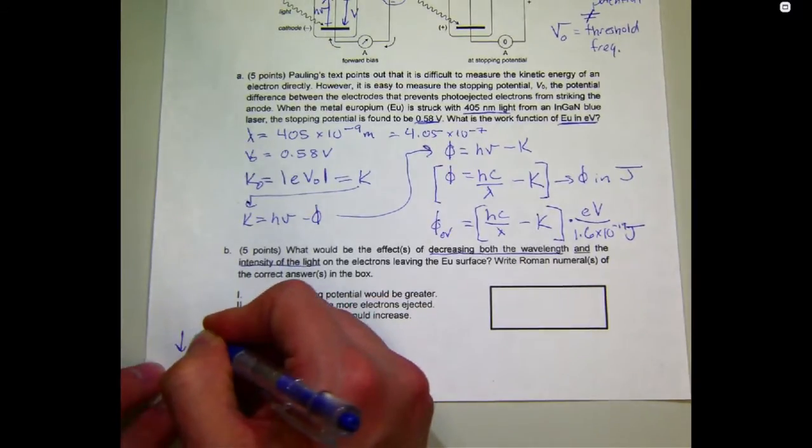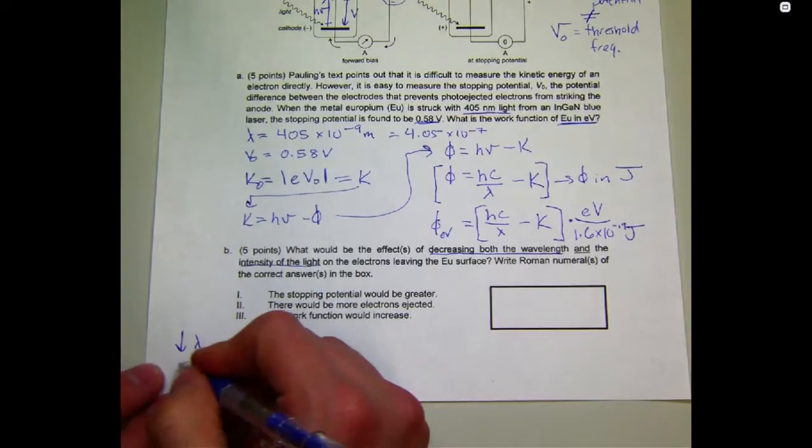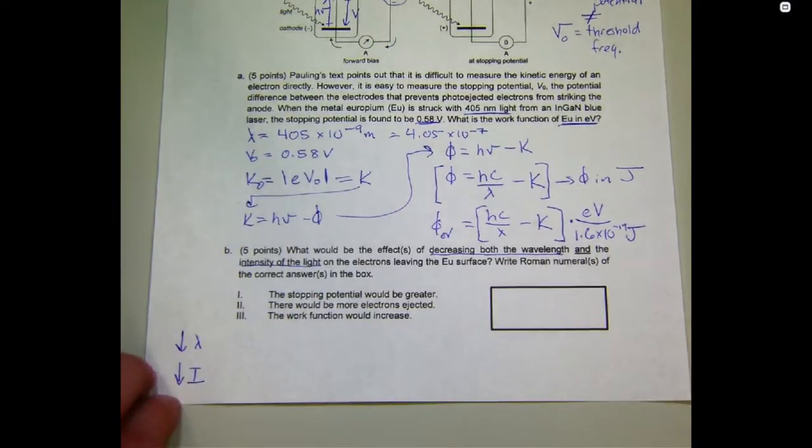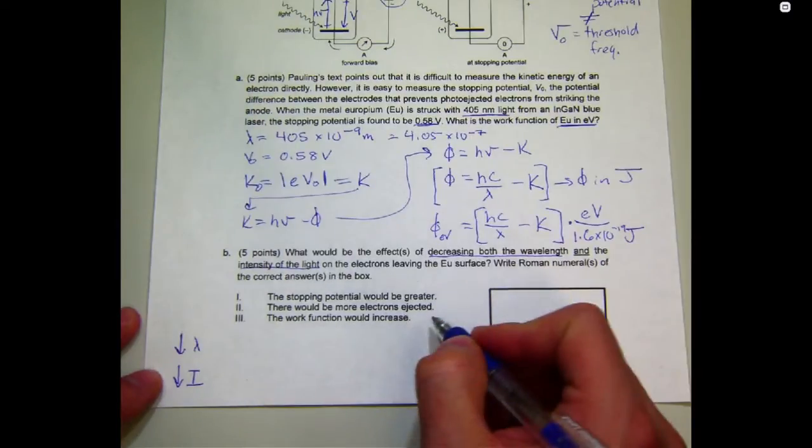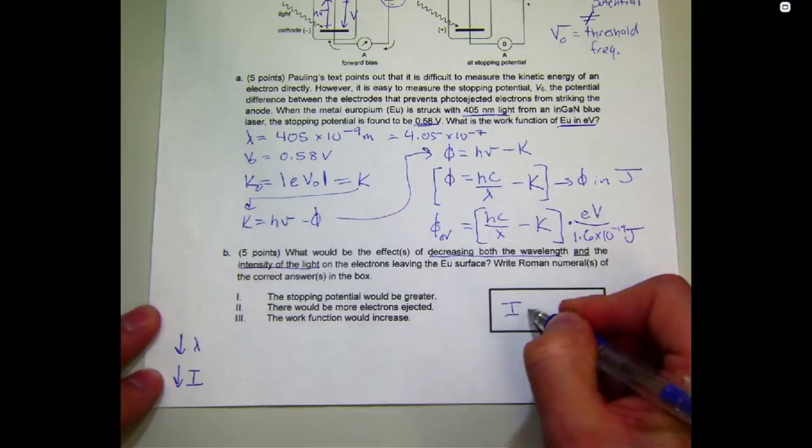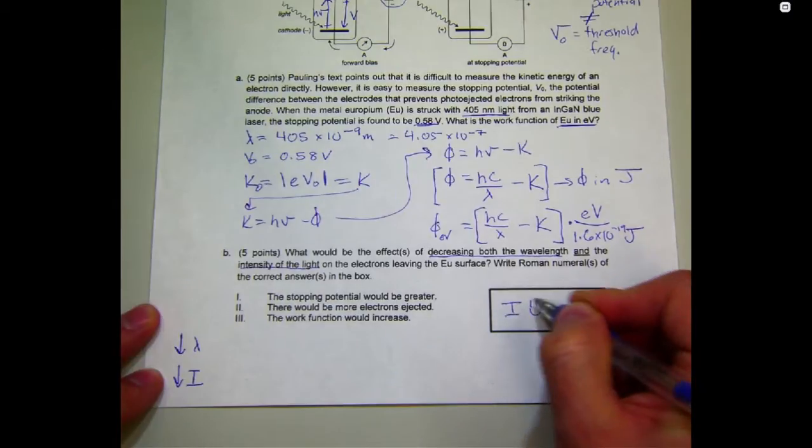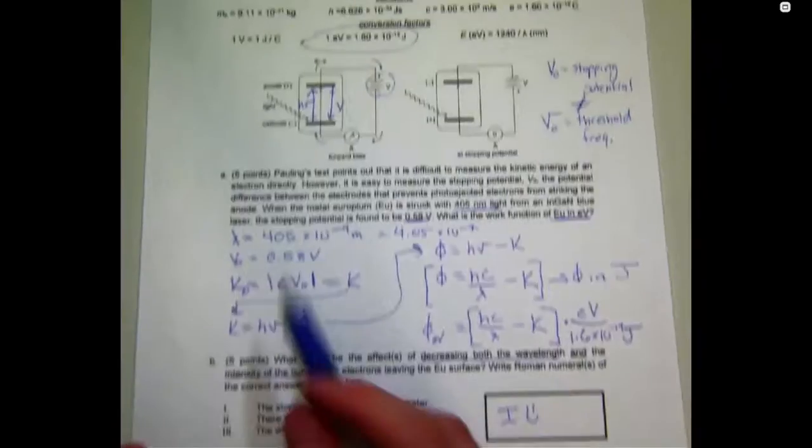We're going to decrease wavelength, and we're going to decrease intensity. So, we want to know, we want to be able to predict what would happen to our experiment when we do those things. So, let's go through our three options here. One. Stopping potential will be greater if we decrease the wavelength and decrease the intensity of the light. So, the answer to this is that one is true.